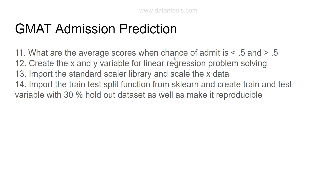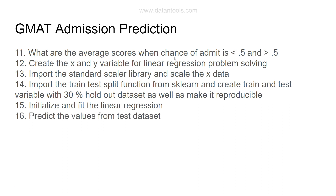Import the train-test split function from sklearn and create train and test variables with a 30% holdout dataset. Make it reproducible using a random state so that running it again — by you or anyone else — gives the same output. Then initialize and fit the linear regression model, and predict values from the test dataset.